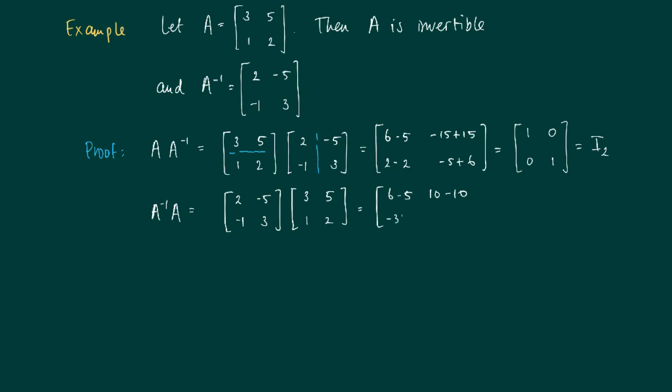First column, first row is 6 minus 5, 10 minus 10, minus 3 plus 3, minus 5 plus 6, which yields 1, 0, 0, 1. Again, the identity matrix, a 2 by 2 identity matrix.